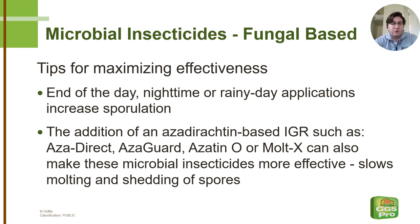We can tank mix most microbial insecticides with an azadirachtin-based insect growth regulator, or IGR. Here are several effective options listed on the slide. This product helps prevent the pests from molting, thus keeping the spores and inoculum we applied on them from being shed off. IGRs can also prevent an insect from turning into an adult and thus not being able to reproduce, and they provide some feeding-blocking activity on certain insects such as aphids.